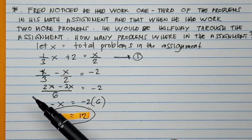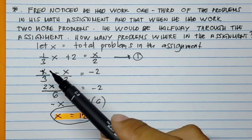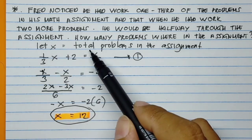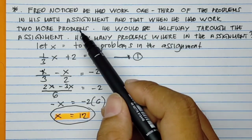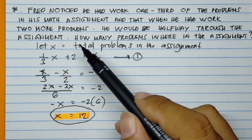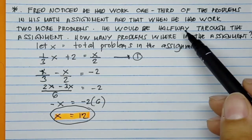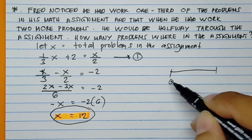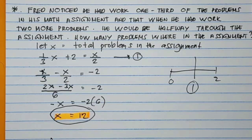So again, where did I derive this X over 3? Because it says here, one-third of the problems in his math assignment. So that will be X over 3, because I assume that X equals the total problems in the assignment. And here, plus 2, because it says here that he has to work with two more problems. So plus 2 equals X over 2, which means he is halfway. When you say halfway, he is in between. Halfway is 1. That's why X over 2.